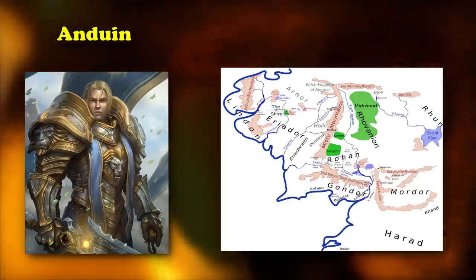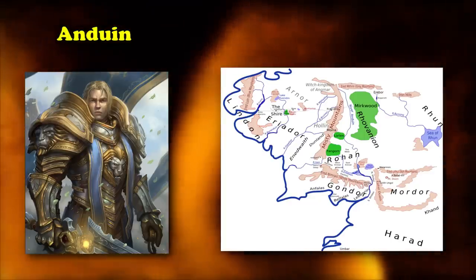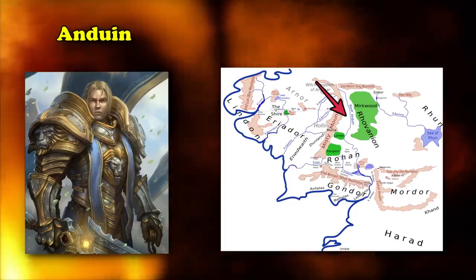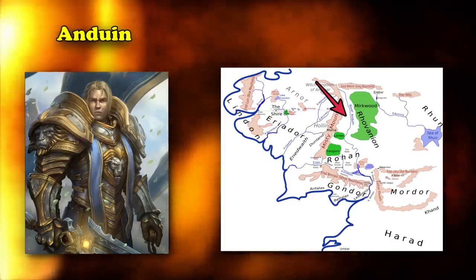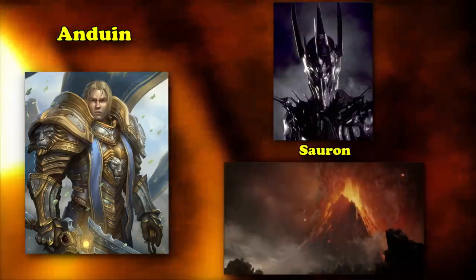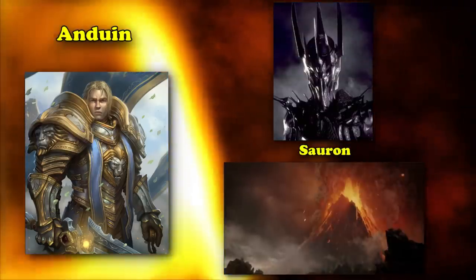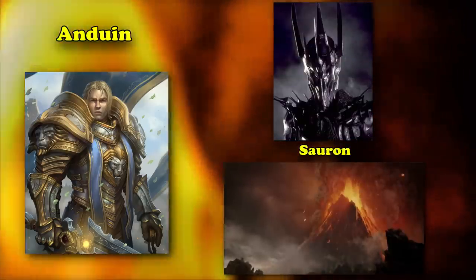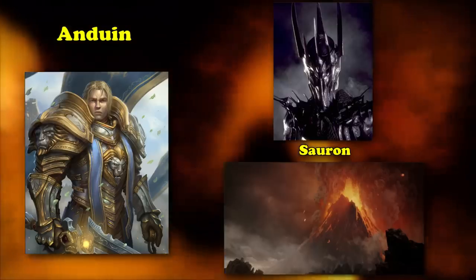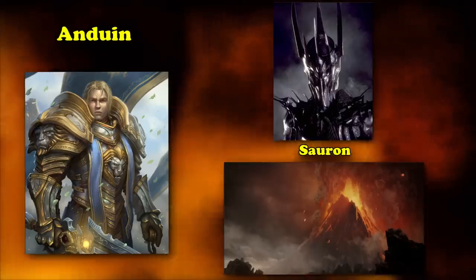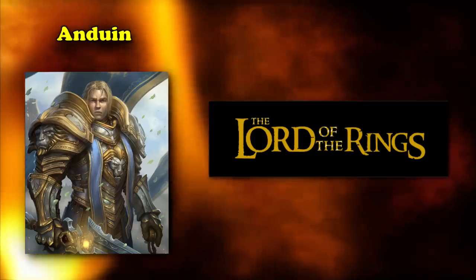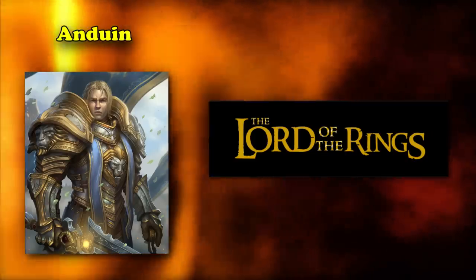In Middle-Earth, the continent Lord of the Rings takes place on, one of the biggest and largest rivers is named Anduin. The main characters even take canoes down the river for a while, as Frodo goes on his journey to destroy the One Ring in Mount Doom and defeat Sauron. Many places and characters in WoW have been directly influenced by Lord of the Rings, and you'll see Lord of the Rings come up in several other names in this video.